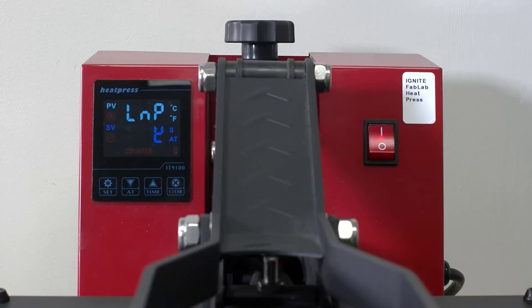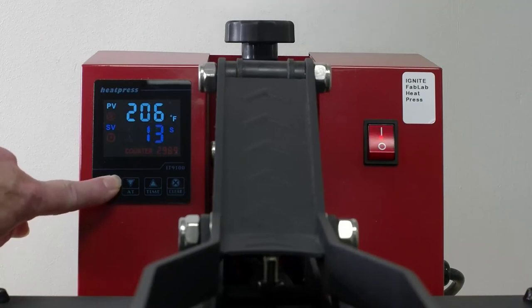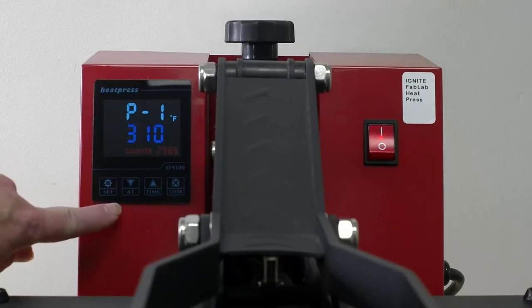Push the red button on the right side to turn the press on. Use the digital display on the left to set the temperature and time. Push the Set button once.